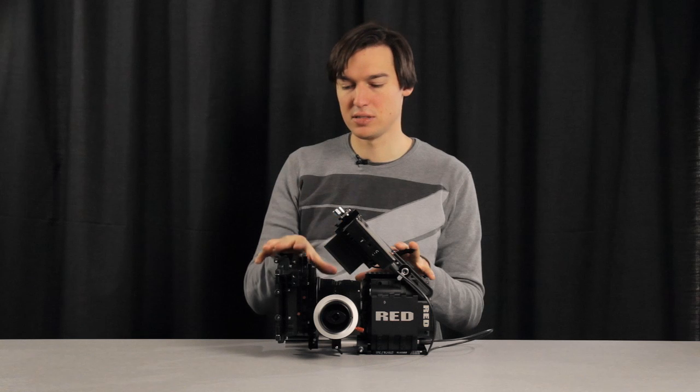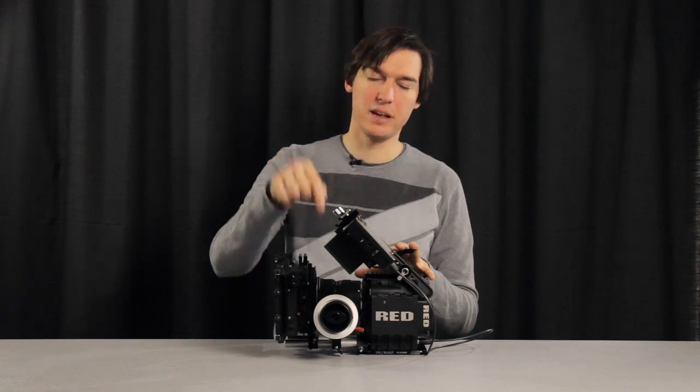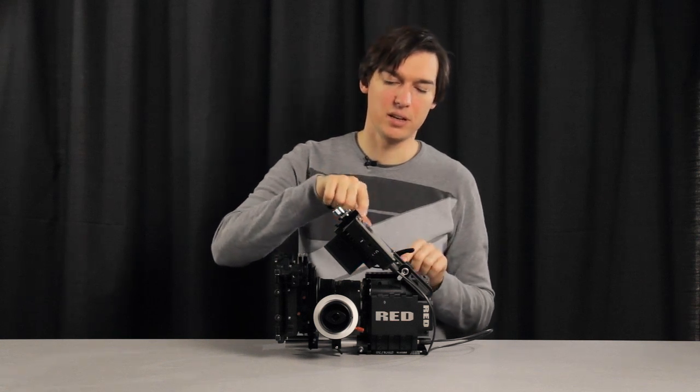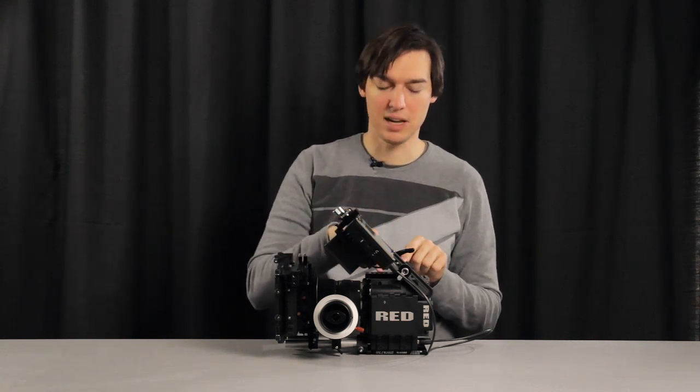So this would be a standard 50mm rail setup. We've got a matte box, we've got an ARRI MFF1 follow focus, and we've got a TV-Logic LCD attached via an EVF mount from Wooden Camera.